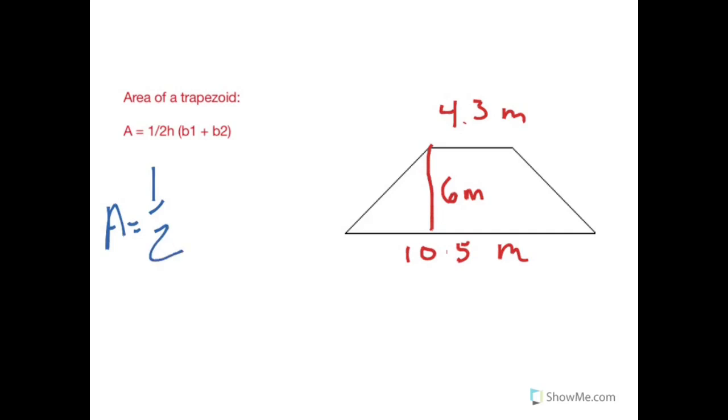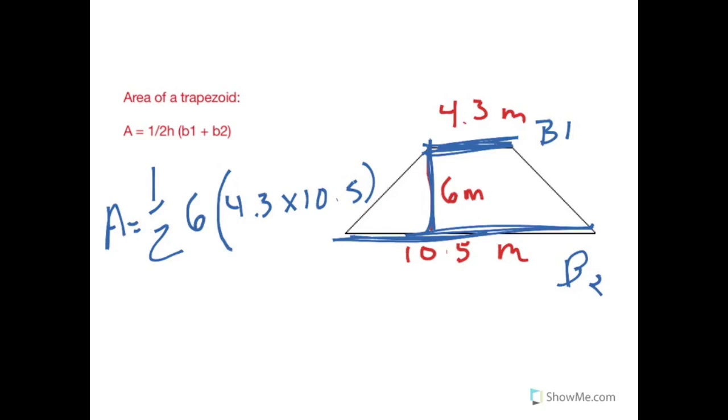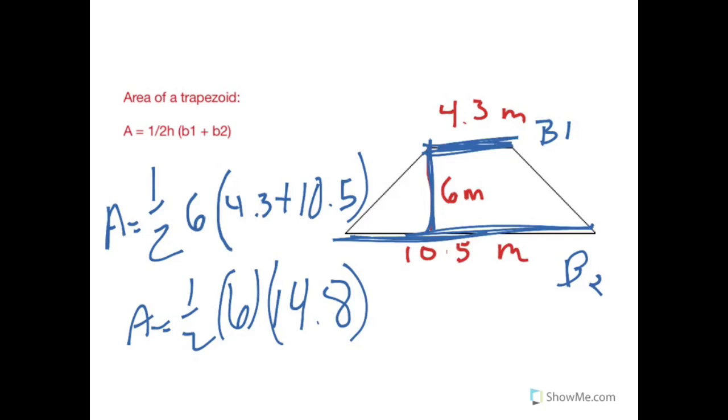Area equals one-half of the height, which is, in this case, six meters, times base one, which is this side, and base two, which is this side. So we're going to take 4.3 plus 10.5. Okay, scratch that. All right, 10.5 plus 4.3 gives us 14.8. And I've got area equals one-half, six times 14.8. Six times 14.8. Let's do the math.